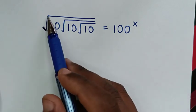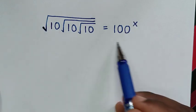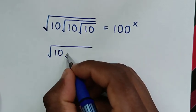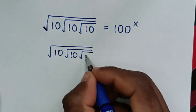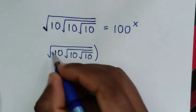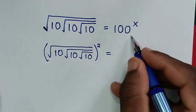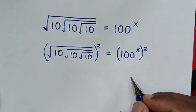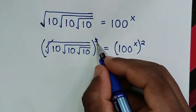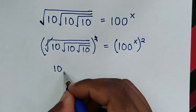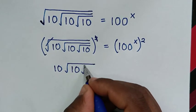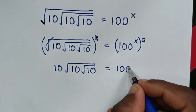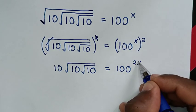In the first step, to remove the first square root, we square both sides. On the left side, squaring cancels the square root, leaving us with 10 times square root of 10 under square root of 10. On the right side, 100 power of x squared becomes 100 power of 2x.